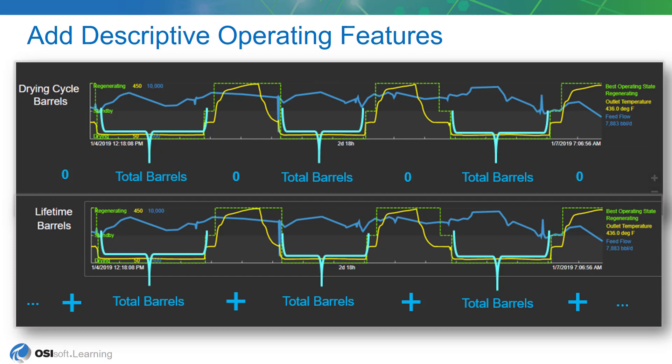It will continue to accumulate barrels throughout the entire life of the dryer, which could be many months or many years. The objective of that metric is really to look at the overall use of the dryer over time, so that the two dryers' usages can be compared to determine whether we've managed the dryer beds properly to get the most out of them during their life.